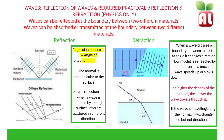In refraction, when a wave crosses a boundary between materials at an angle, it can change direction. How much it is refracted depends on how much the wave speed slows down or speeds up. The higher the density of the material, the slower the wave travels through it. If the wave is travelling along the normal, it will change speed but not direction. So when you shine a light at 90 degrees to a surface, in the same direction as the normal, the light wave will not change direction.